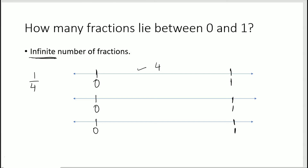If I say 25/100, you would divide into 100 parts and show the 25th part. If I have to show 7/31, the denominator is 31, so divide this portion into 31 parts and show the 7th part. That means we can have as many fractions as we want between 0 and 1, so the answer is infinite — we cannot count how many fractions we can have. That was all about representing fractions on a number line — see you in the next video!